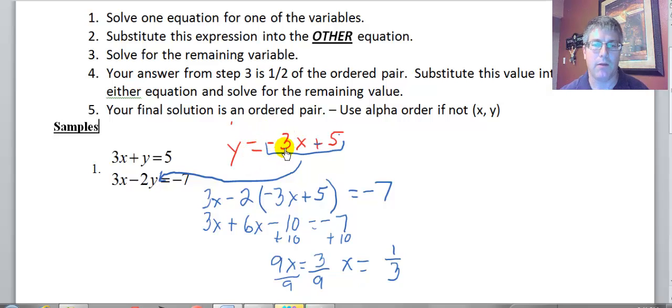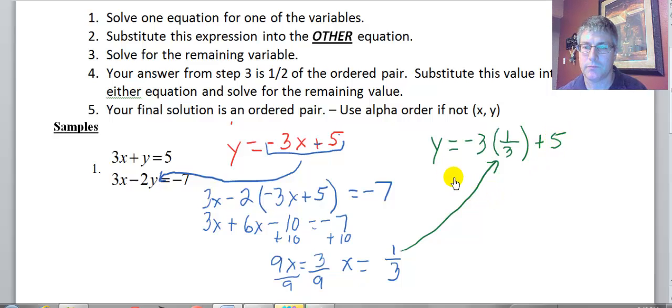I might as well substitute into my red equation here. So I will take my 1 third, Y equals negative 3X or 1 third. So I've taken my 1 third and I've substituted it in, plus 5, which gives me Y equals negative 1 plus 5. So Y equals 4. So I found the X and I found the Y that will satisfy both of those equations.